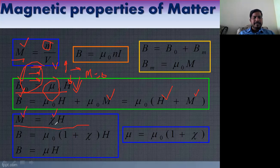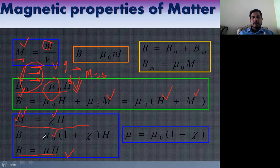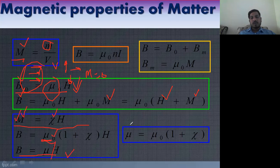If chi is large, M is high. For paramagnetic material, chi is large and positive, so magnetization is also high. Remember: B = μ₀H, and also μ = μ₀(1 + χ). These are very important equations; in every competitive exam you will see one of these equations.